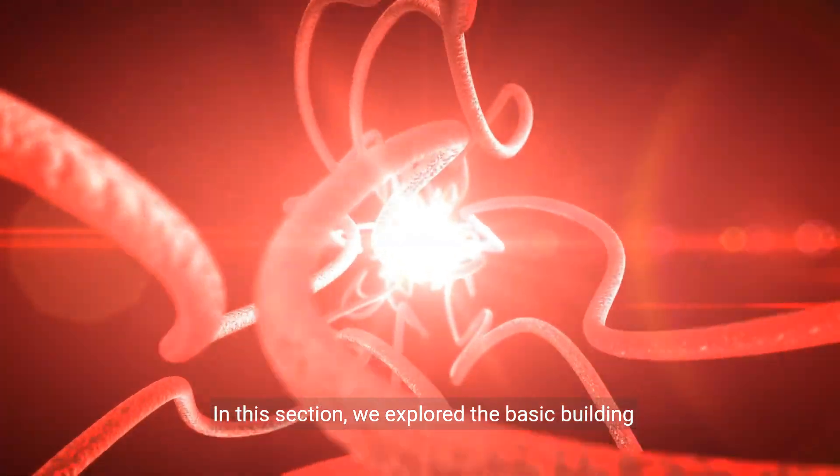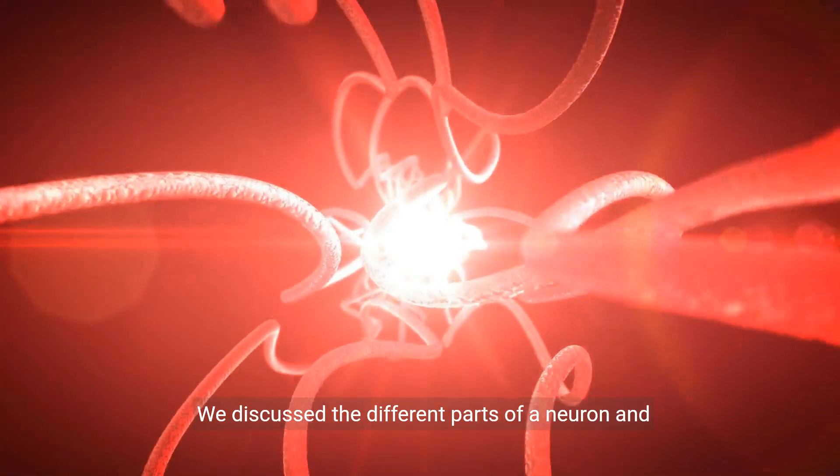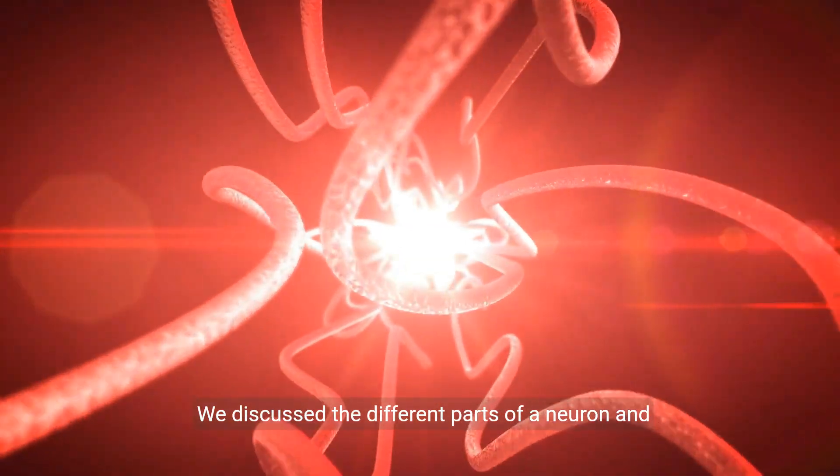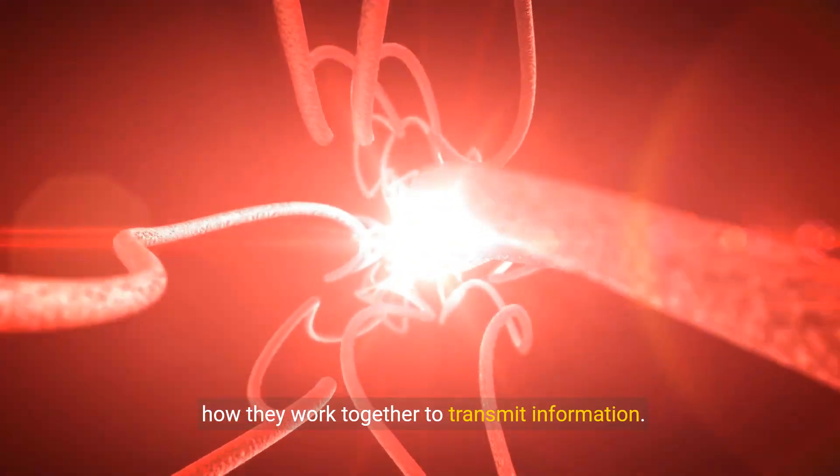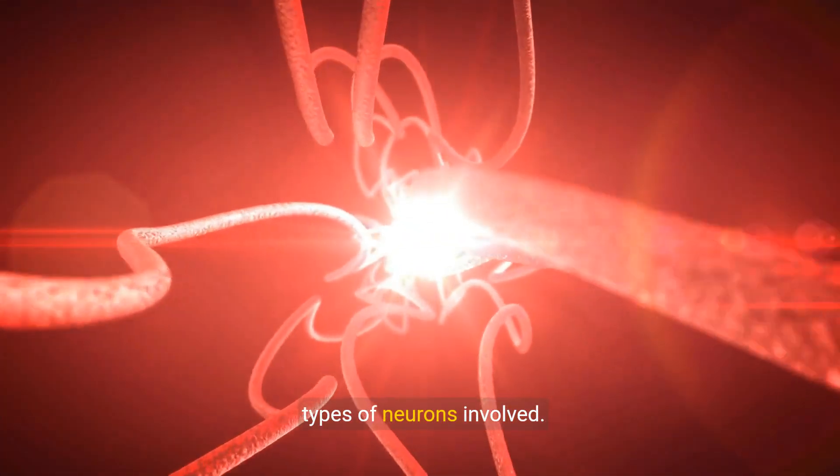In this section we explored the basic building blocks of the nervous system, neurons. We discussed the different parts of a neuron and how they work together to transmit information. We also covered the reflex arc and the different types of neurons involved.